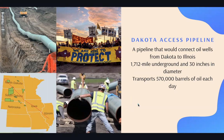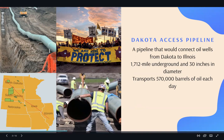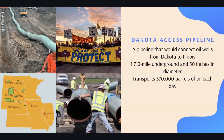The pipeline transports 570,000 barrels of oil each day and has the potential to transport over a million barrels of oil. I included two other pictures. The top right picture shows Native American tribes protesting against the pipeline, and I will discuss that in our later slides. The bottom right picture shows some of the workers that work on and build the pipeline.